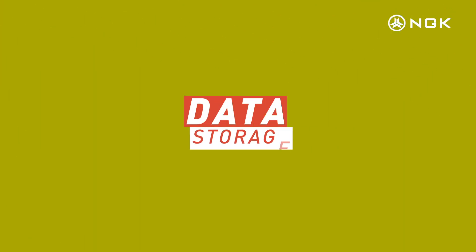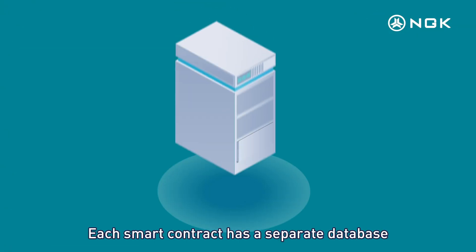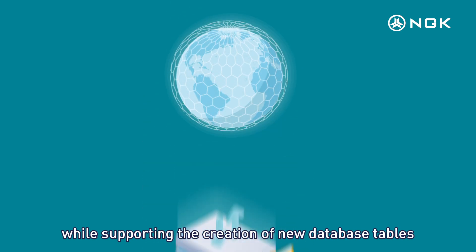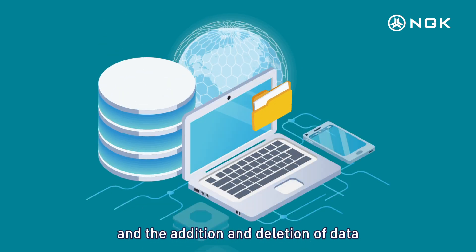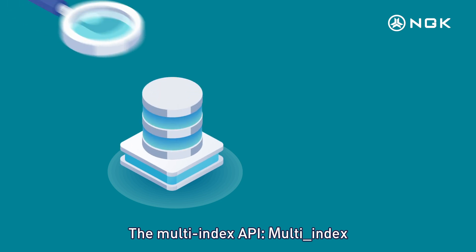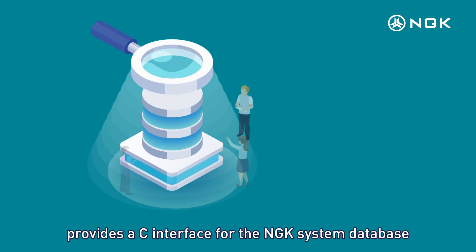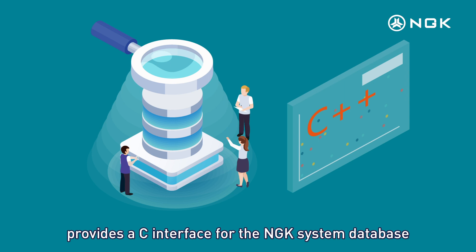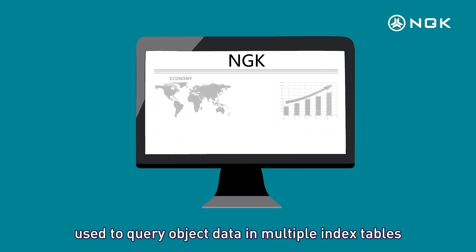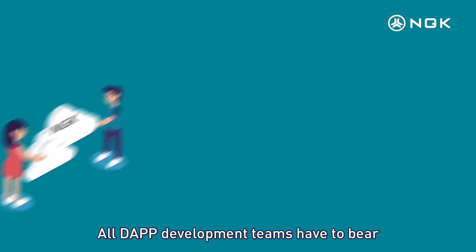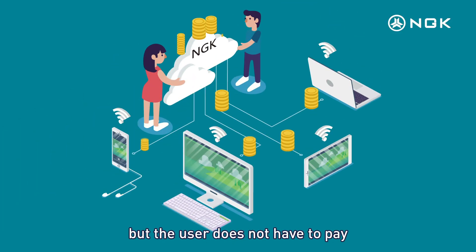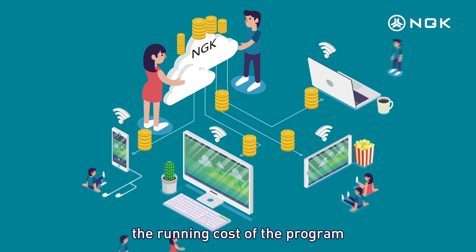Data Storage. Each smart contract has a separate database, supporting the creation of new database tables and addition and deletion of data. The Multi-index API provides a C++ interface for the NGK system database, using multiple index operators to query object data across multiple index tables. All DApp development teams bear the running cost of data storage, but users do not have to pay the running cost of the program.